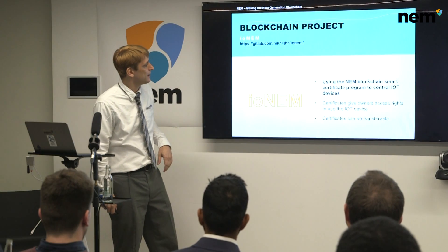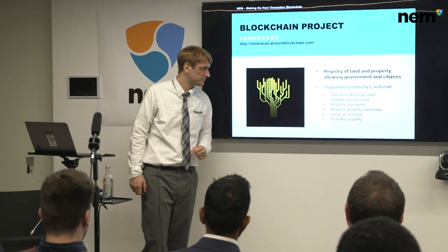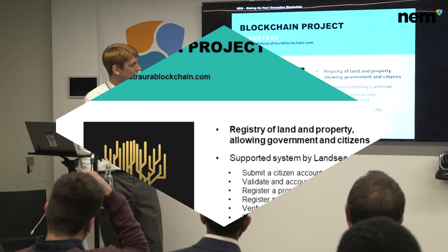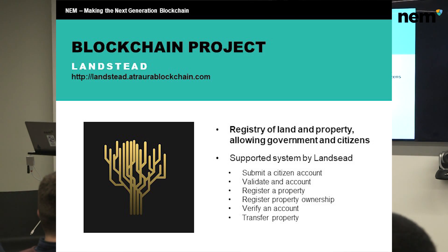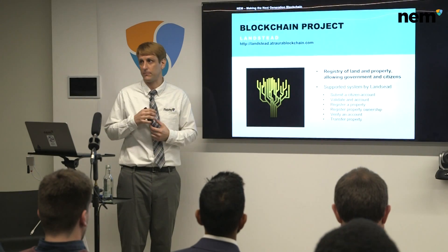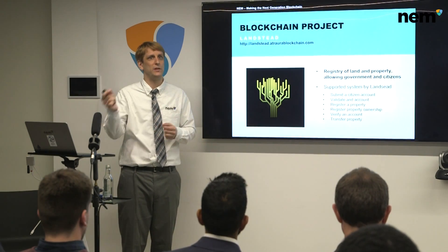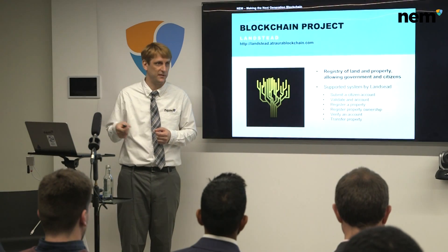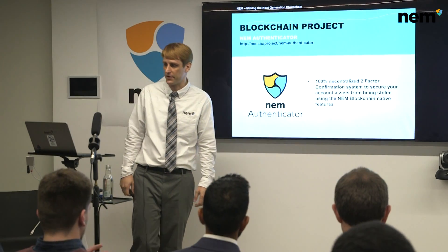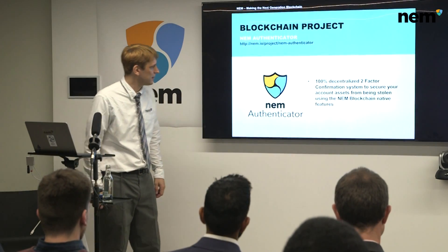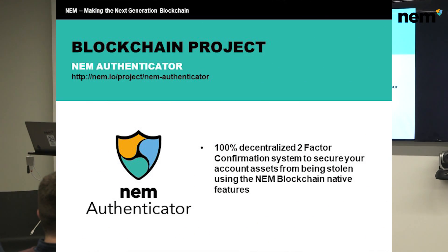We have another one called Landstead, where citizen ID tokens are given to citizens — it's a proof of concept — and property titles are made on the blockchain. Property titles can only be traded and transferred between registered citizens. This is an example of how to put property ownership on the blockchain.